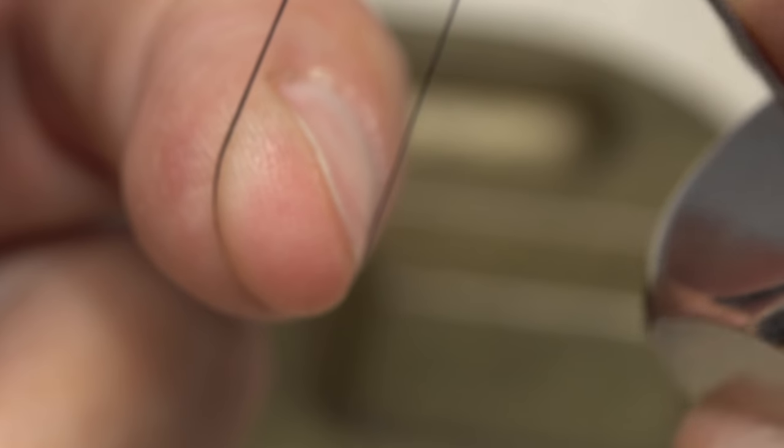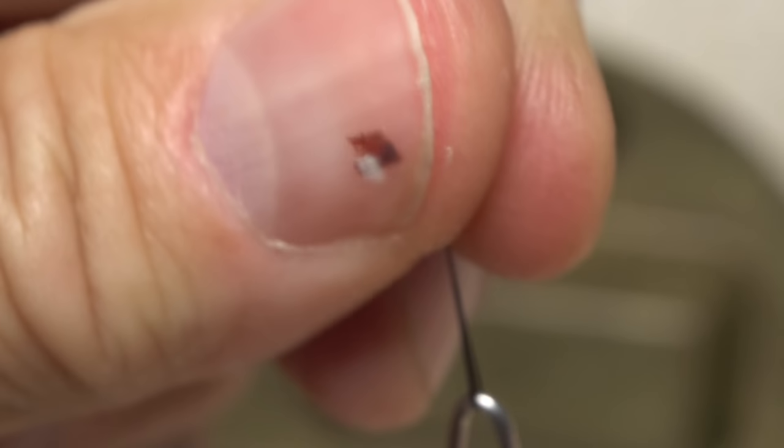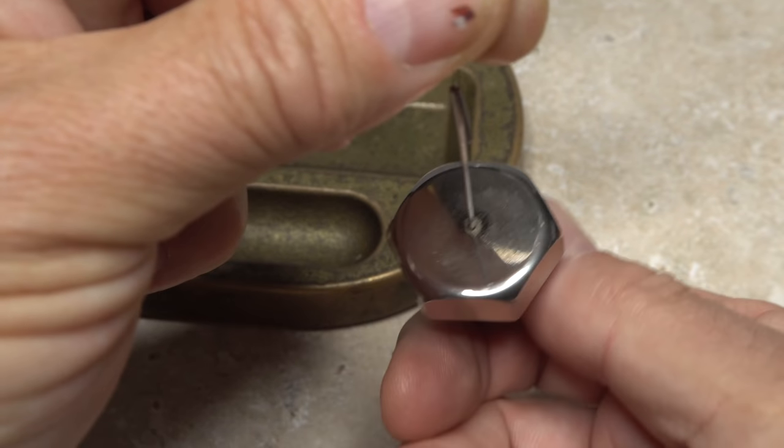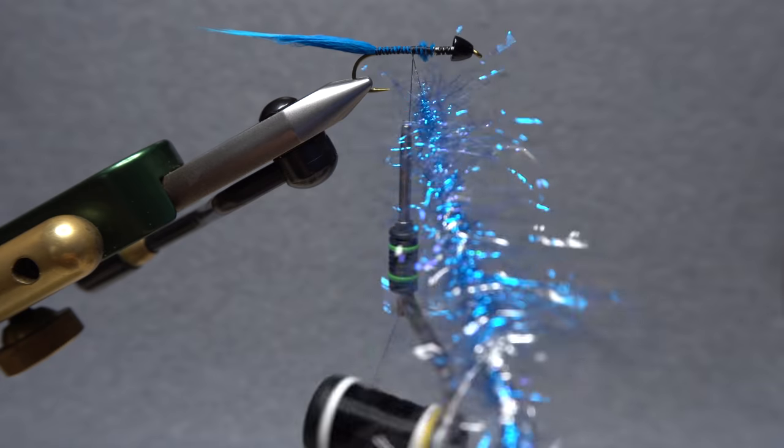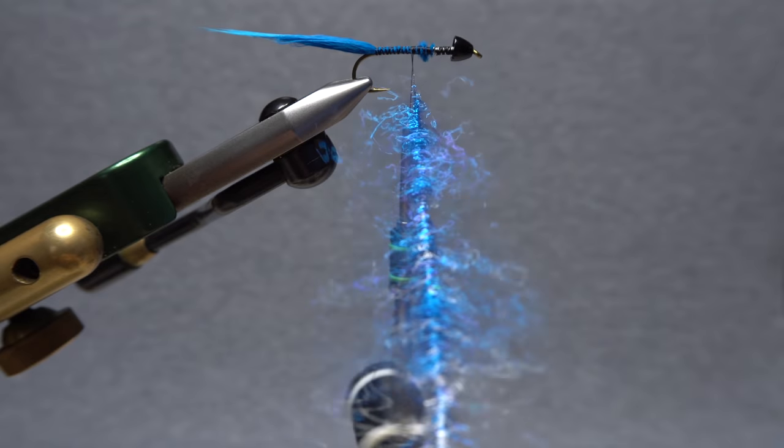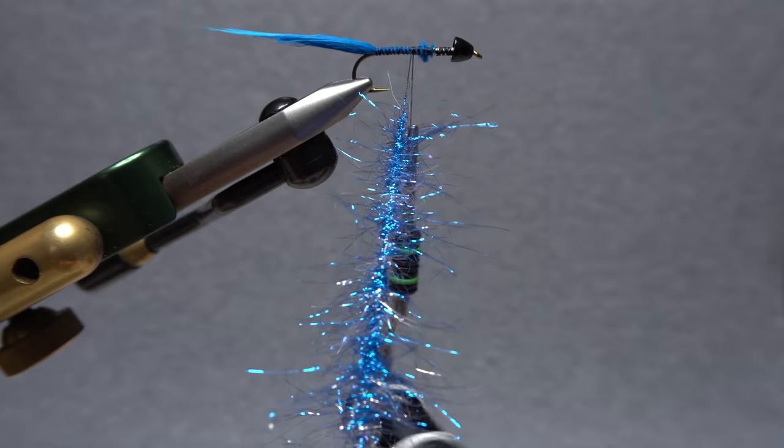Pick up your dubbing whirl and insert the hook into the bottom of the loop as you continue to squeeze the loop and remove the tip of your middle finger. Keep squeezing with your fingertips as you give the whirl a good clockwise spin. Let go with your fingertips and the dubbing should spin into a fuzzy noodle. Basically you've made a composite loop.